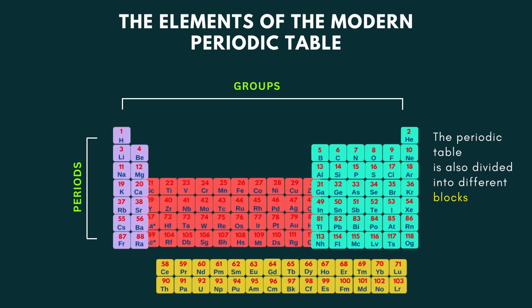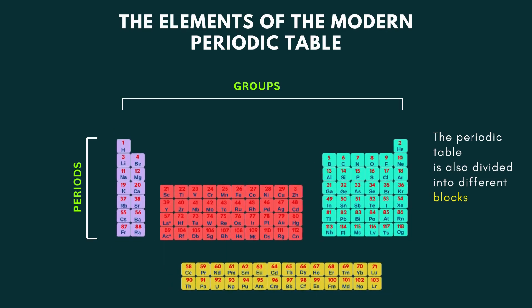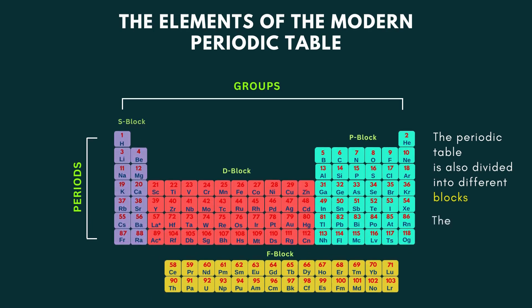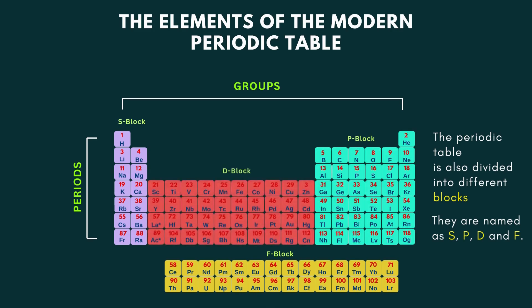The periodic table is also divided into different blocks. They are named as s block, p block, d block, and f block.